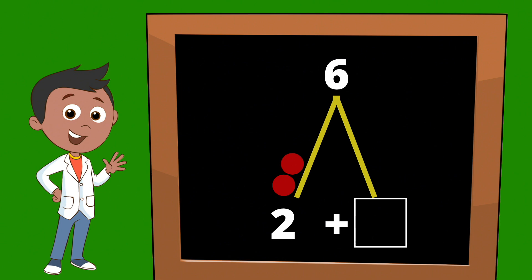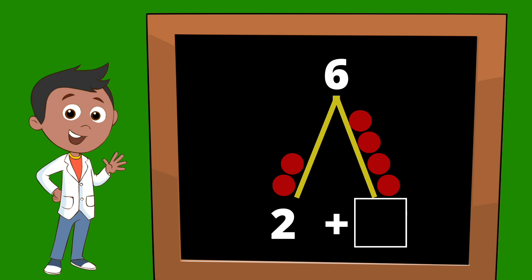We already have two, and we're going to add: three, four, five, six. Now we have a total of six circles. Let's find out how many circles are on the right side of our Math Mountain — that will give us our mystery number. Let's count: one, two, three, four. There are four circles on the right side of our Math Mountain, so our mystery number is the number four. Great job, we just solved that equation!